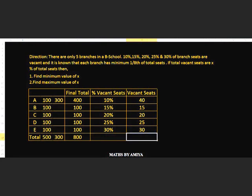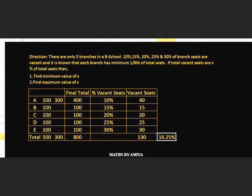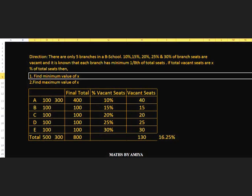Now we need to find how many vacant seats there are. Vacant in A: 10% of 400 = 40. B: 15% of 100 = 15. C: 20% of 100 = 20. D: 25% of 100 = 25. E: 30% of 100 = 30. Summation of all is 130. So percentage of vacant seats is 130 divided by 800 into 100, which is 16.25%.